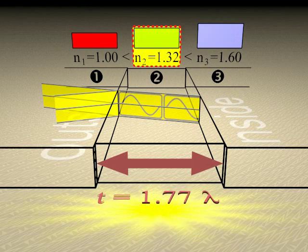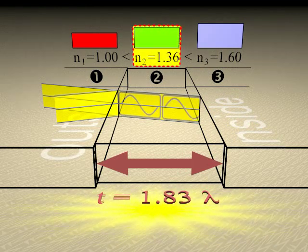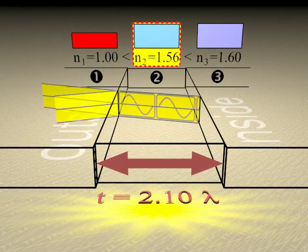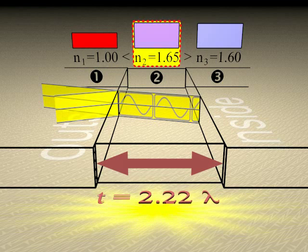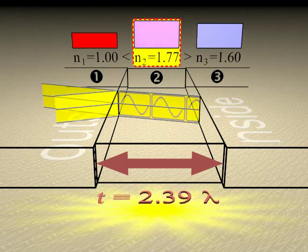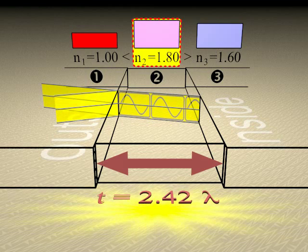Note that if the index changes, the refracted wavelength also changes. The thickness of the middle thin film medium doesn't change, but does represent a different multiple of refracted wavelengths depending on the amount of refraction.